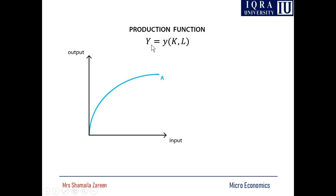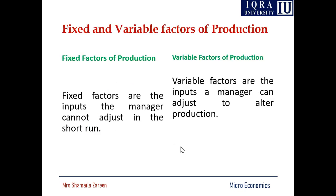The production function is concave and can be written as y = f(K, L), where input and output are represented. You are giving the output quantity as a function of both labor and capital.